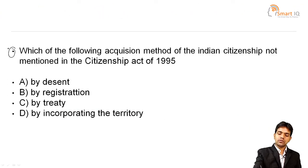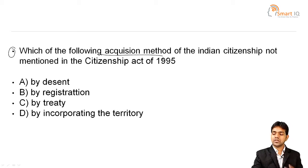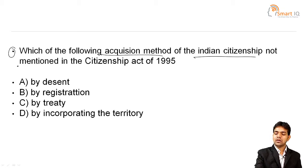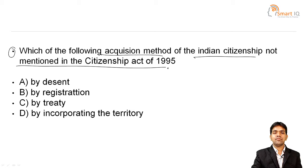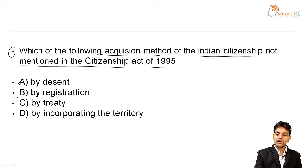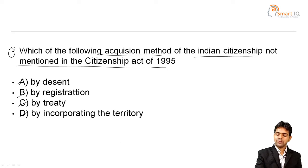Next question: Which of the following acquisition methods of Indian citizenship is NOT mentioned in the Citizenship Act of 1955? Option A: By descent. Option B: By registration. Option C: By treaty. Option D: By incorporating the territory. The answer is Option C — by treaty.